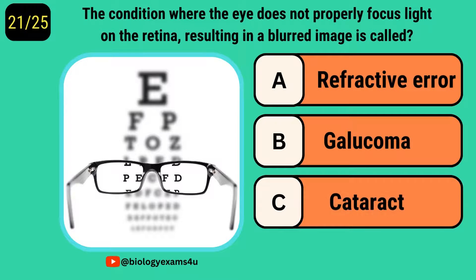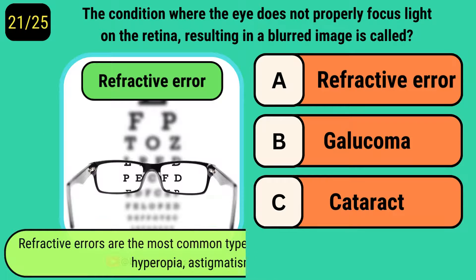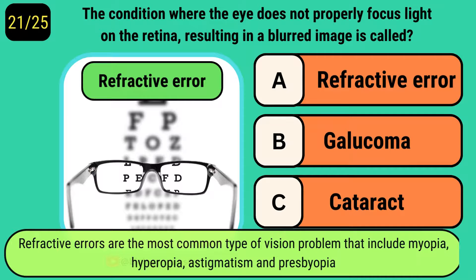The condition where the eye does not properly focus light on the retina, resulting in a blurred image, is called? It is collectively called refractive error. Refractive errors are the most common type of vision problem and include myopia, hyperopia, astigmatism, and presbyopia.